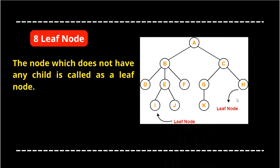Leaf nodes: the node which does not have any child is called a leaf node. A, B, C are not leaf nodes because they have children. D does not have any children, so D is a leaf node. F does not have any children, so it is a leaf node. I and J don't have any children so they are also leaf nodes. H and K don't have any children so they are also leaf nodes. The leaf nodes in this tree are D, I, J, F, K, H.